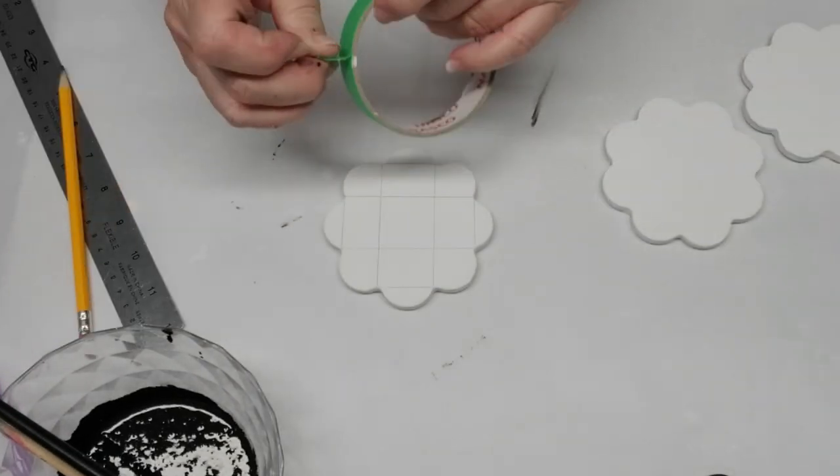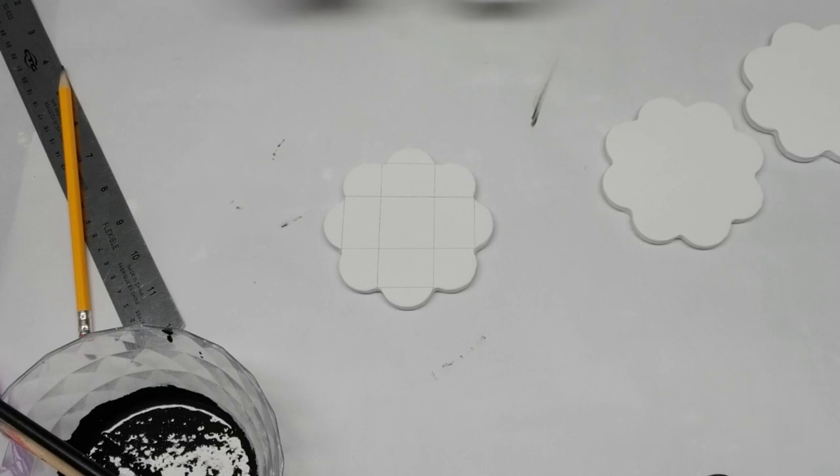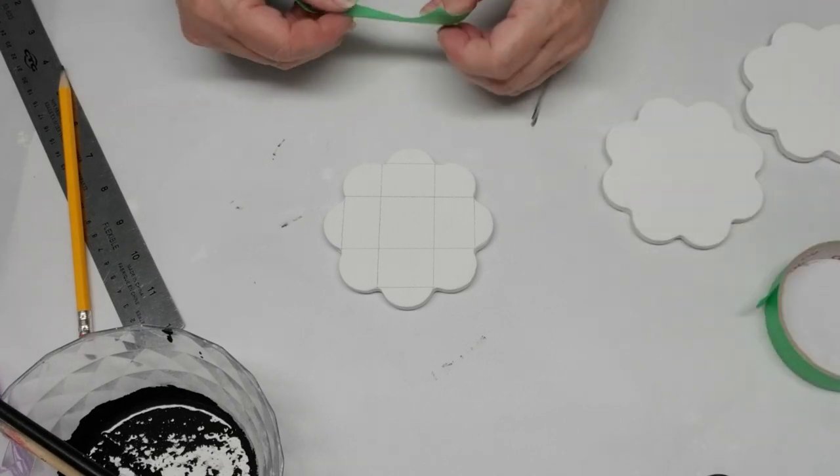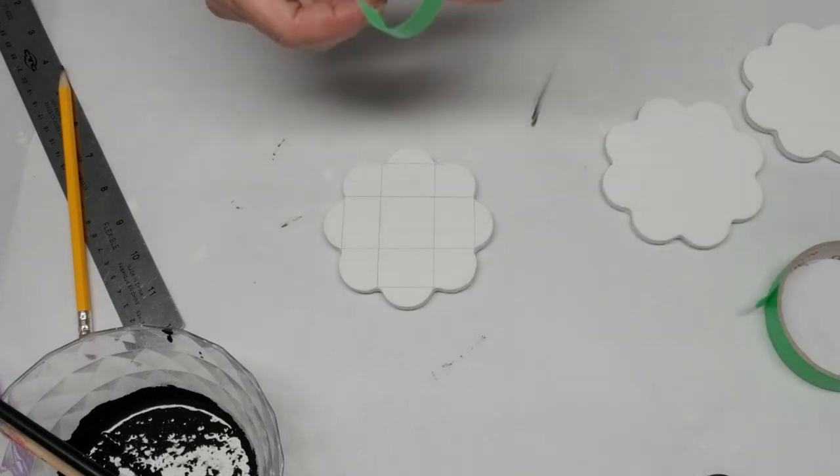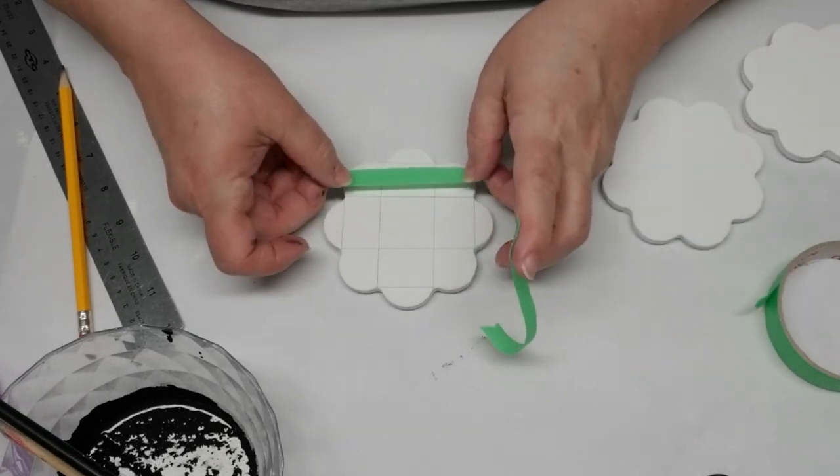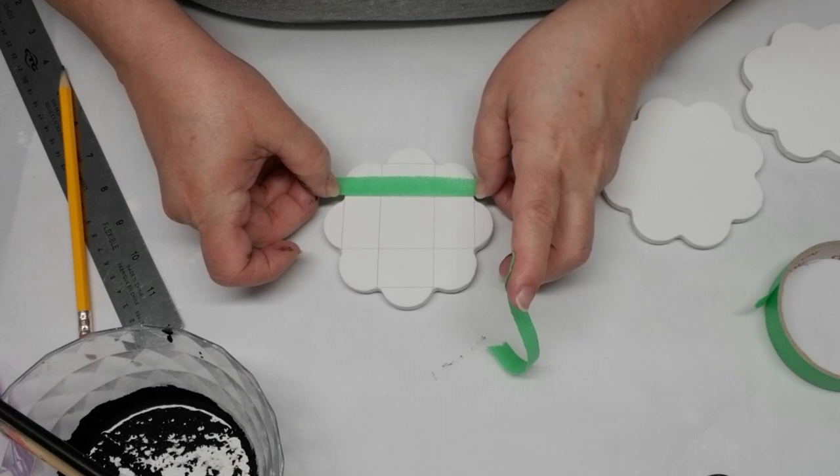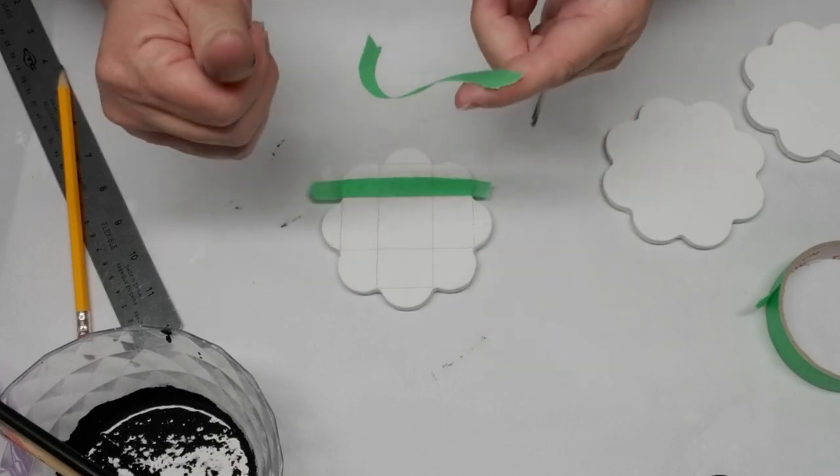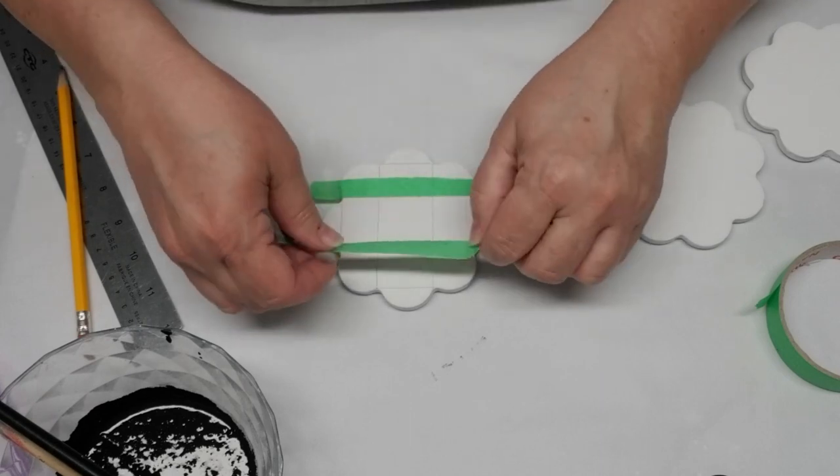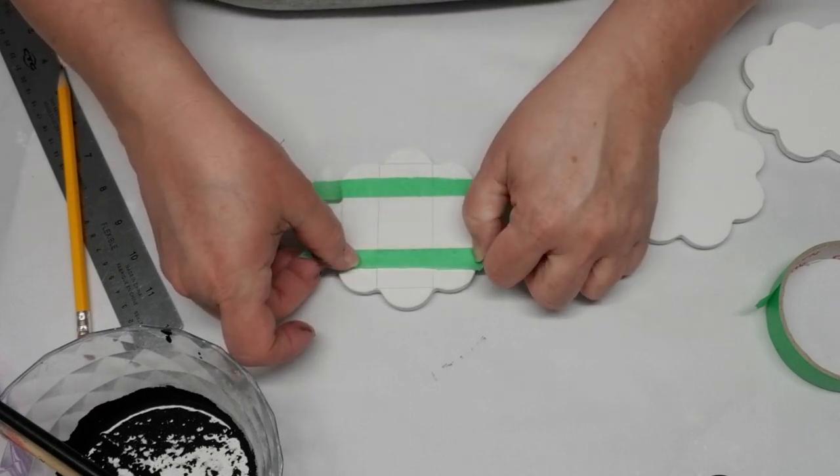As you notice, the squares aren't all the same size, but I think that's going to add to the character of these coasters. I'm taking some painters tape and splitting it in half lengthwise so I have thinner pieces to work with, because the width of this painters tape is too wide. You'll probably get the idea as you see me do this.